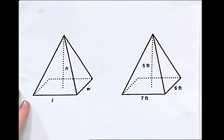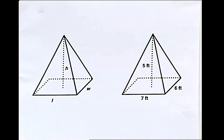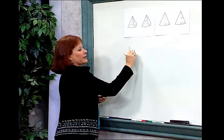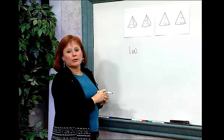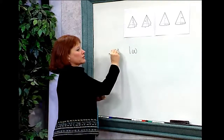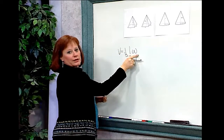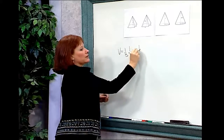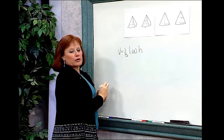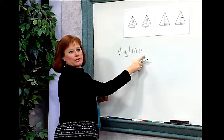In our first example, we're going to consider a pyramid that has a rectangular base. The base is length times width — it's a rectangle. If we want the area of the base, we would just take the length times the width. In a pyramid, we want one-third of the base times the height. So the volume of this pyramid will be one-third of the base, which is a rectangle, so it's length times width times the height. The formula is one-third times length times width times height.